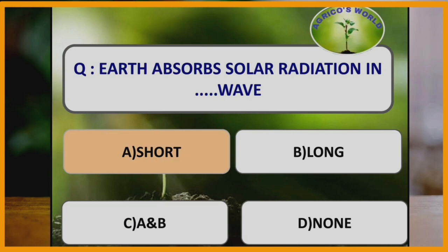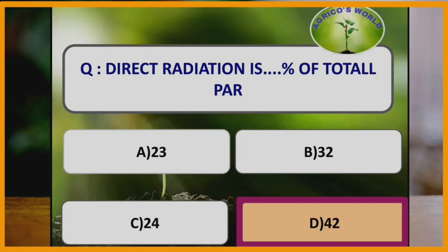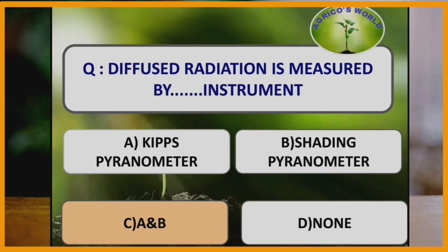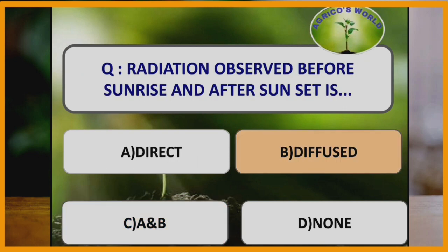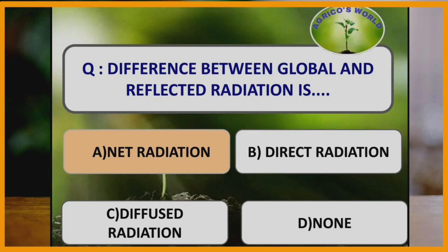Earth absorbs solar radiation in short wave, whereas it emits solar radiation in long wave. Direct radiation is a percentage of total photosynthetically active radiation. Diffused radiation is 65 percent of photosynthetically active radiation. Diffused radiation is measured by Kipp's pyranometer and shading pyranometer — both are instruments used for measuring diffused radiation.